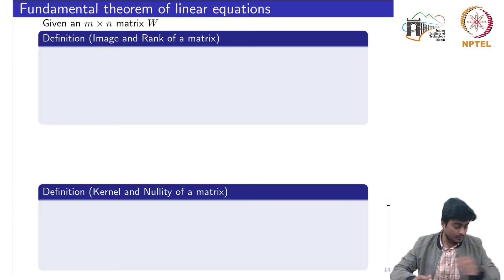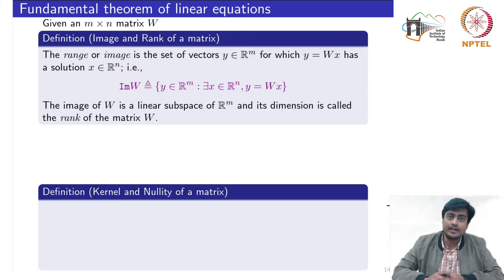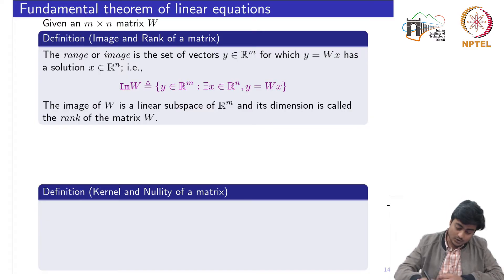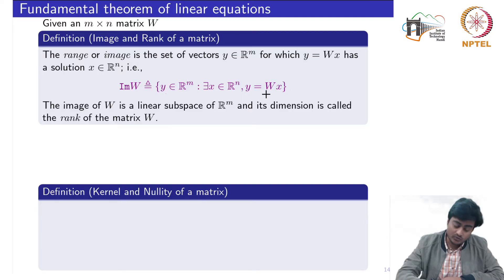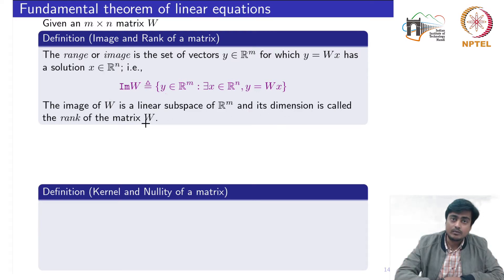For a given m×n matrix W, we define two subspaces: the range subspace and the null subspace. The range or image is the set of vectors y for which y = Wx has a solution x in the n-dimensional space. The image of W is defined as the set of all y in the m-dimensional space such that there exists x in the n-dimensional space satisfying y = Wx. The image of W is a linear subspace of R^m, and its dimension is called the rank of the matrix W.